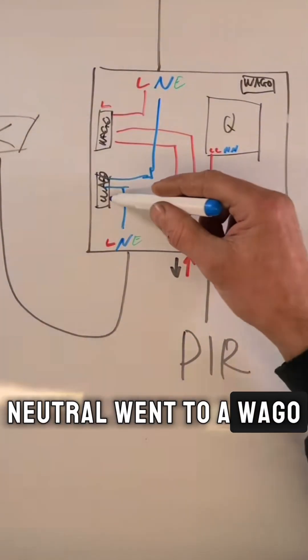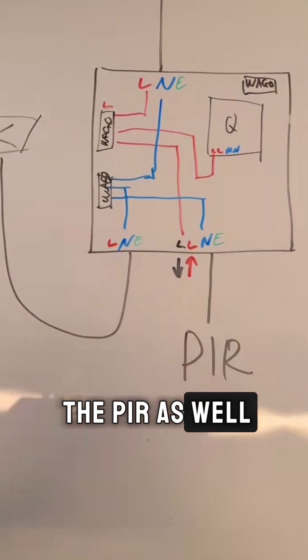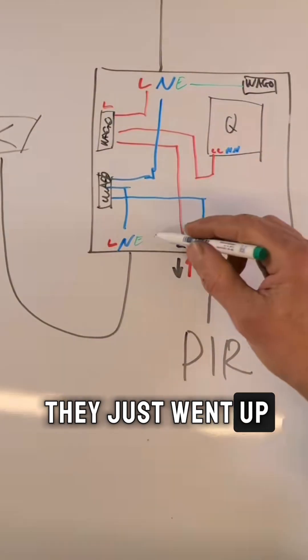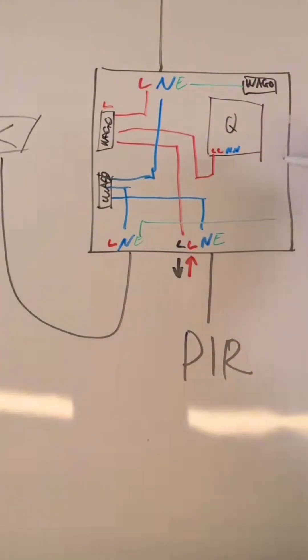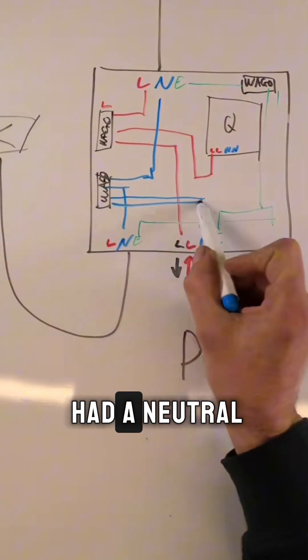The neutral went to a Wago, and then neutral to the PIR as well. And all the earths they just went up to their own Wago.